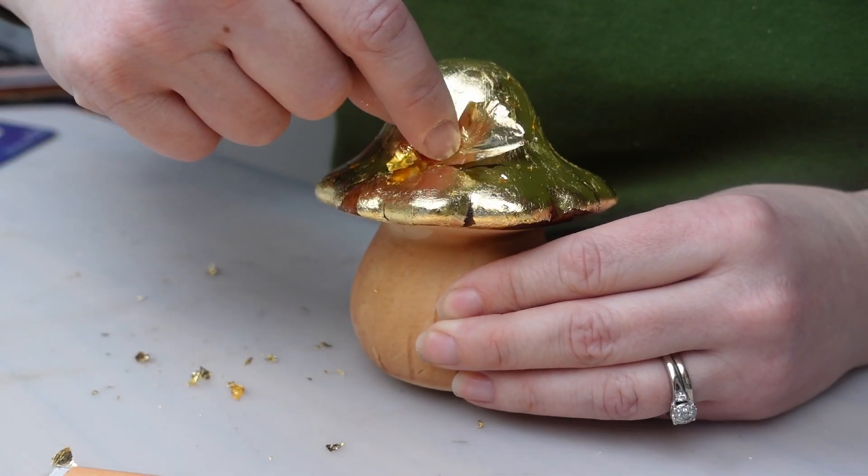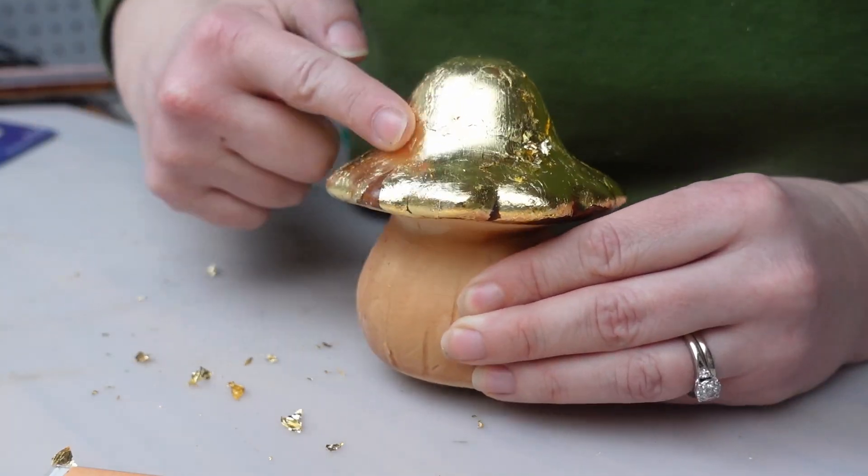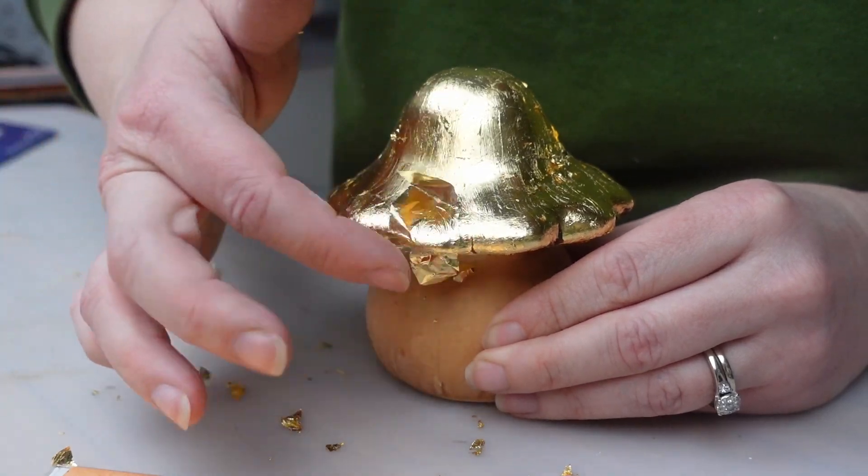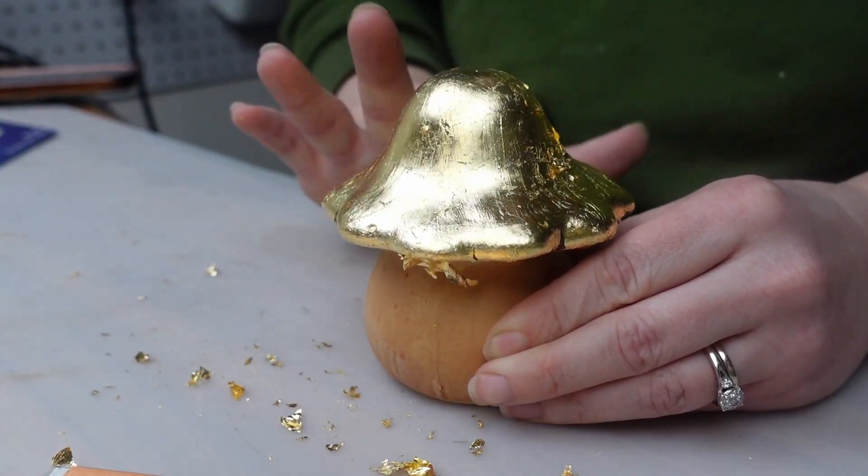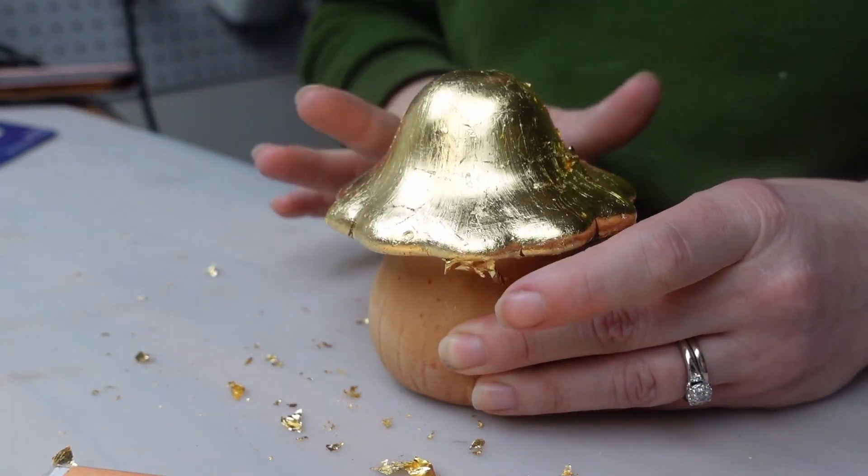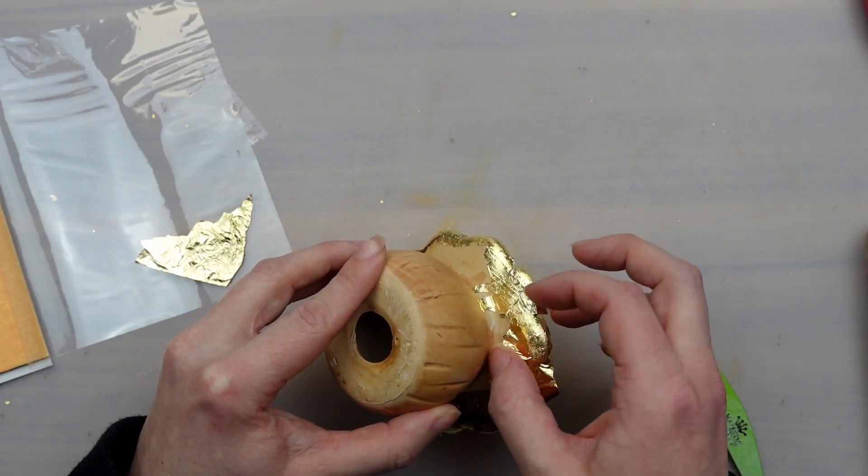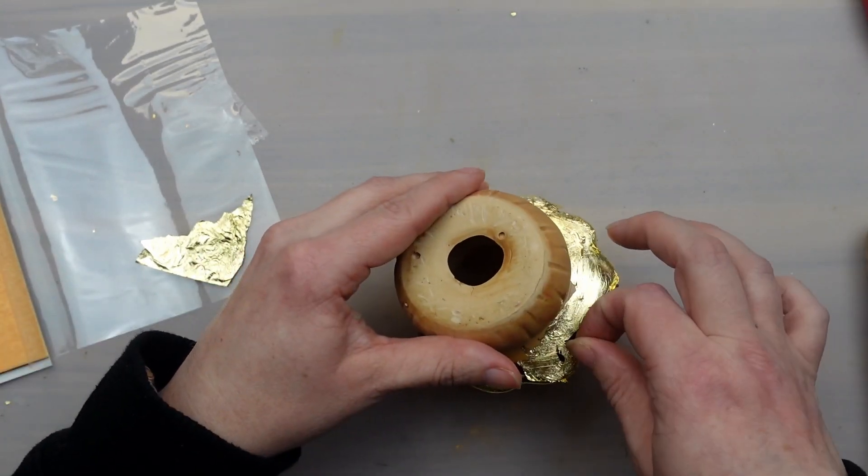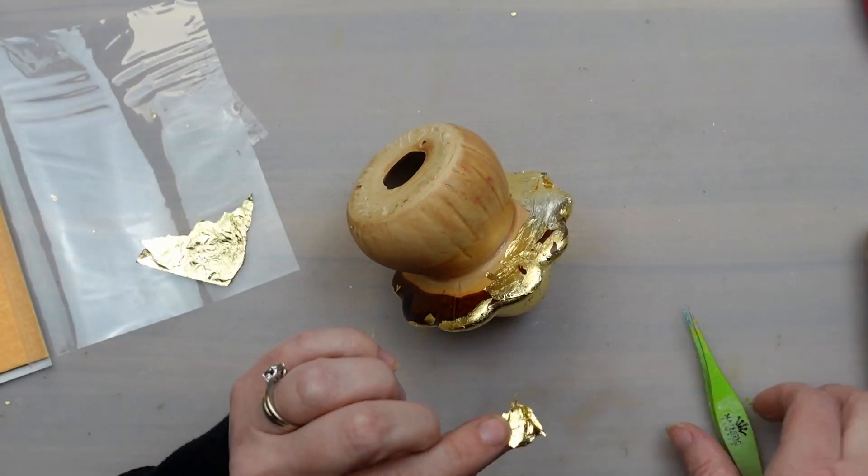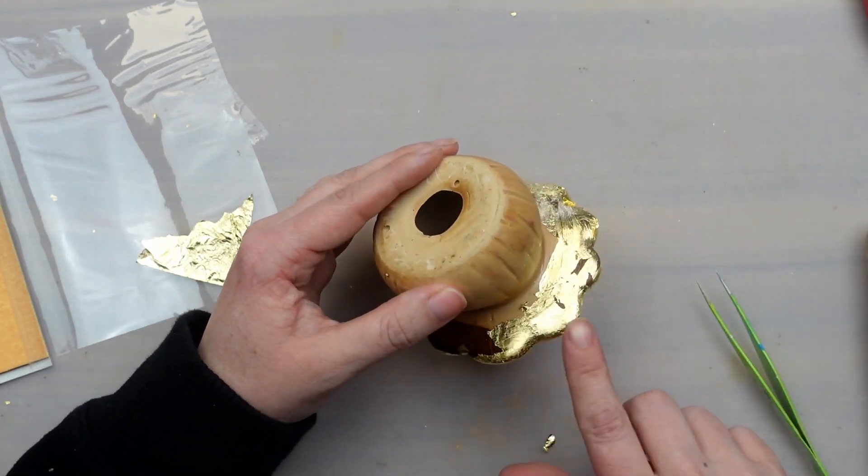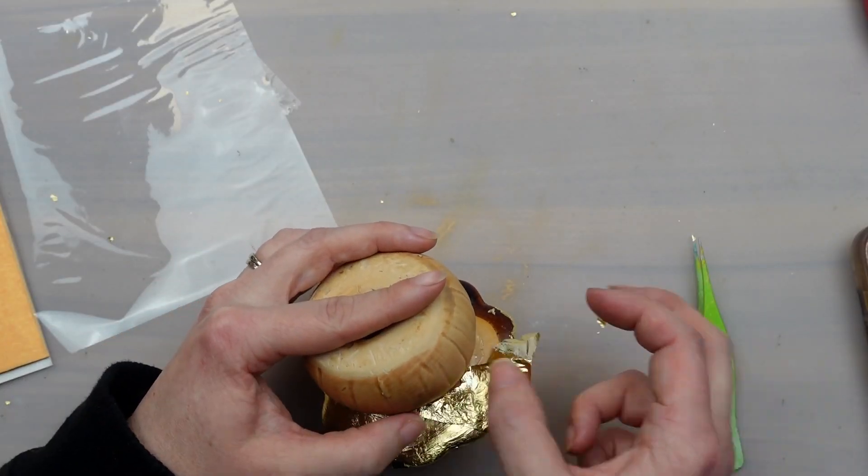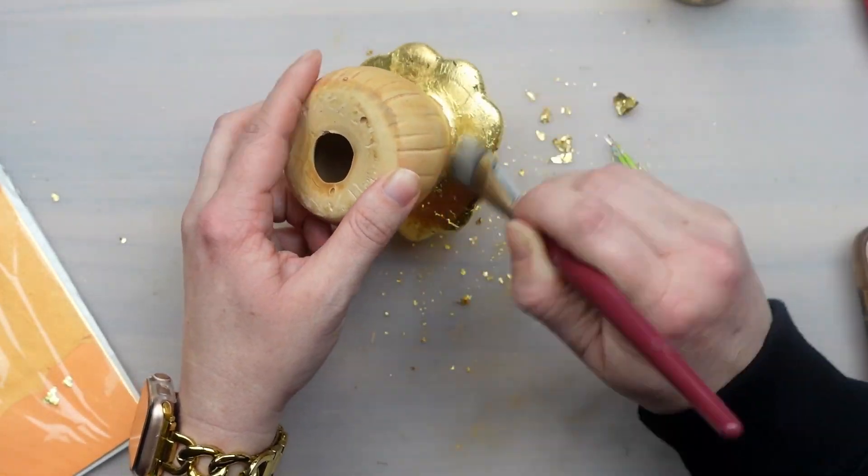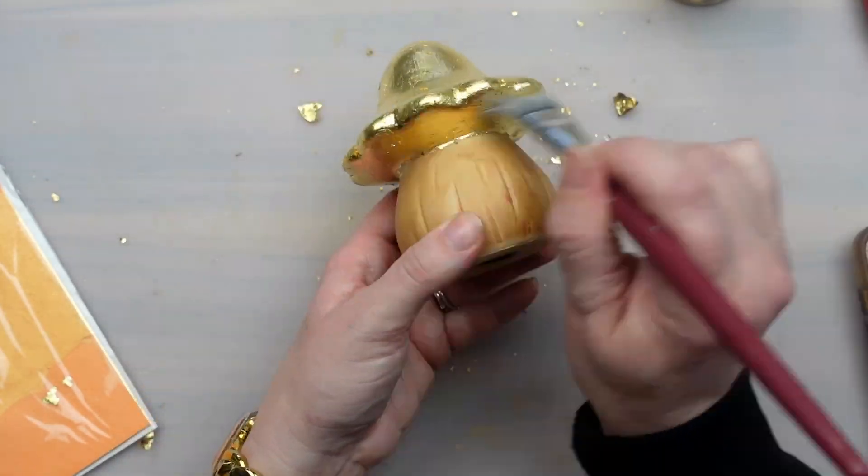On areas where the leaf didn't adhere right away I just picked up some of that scrap and reapplied it. Once all the metal leaf is on you want to take a brush. I use a paintbrush and dust off any loose pieces.